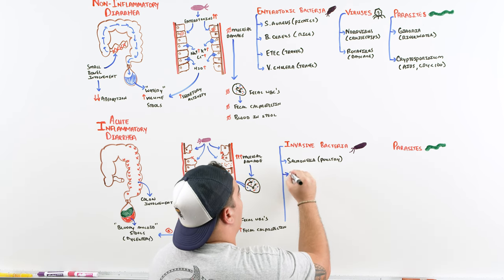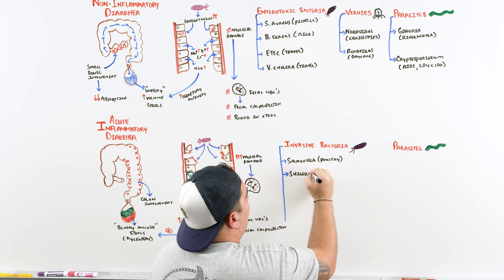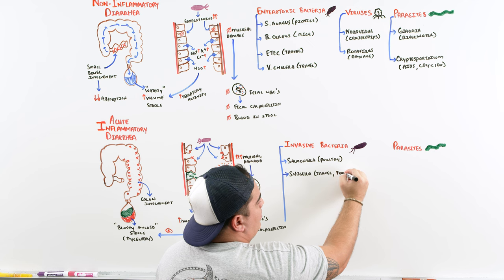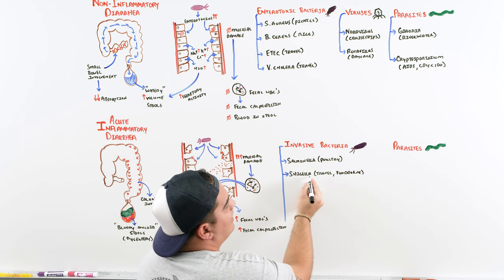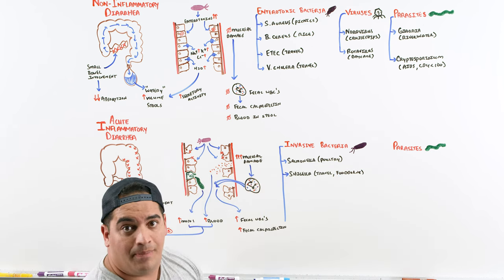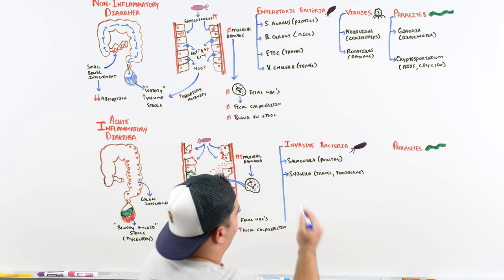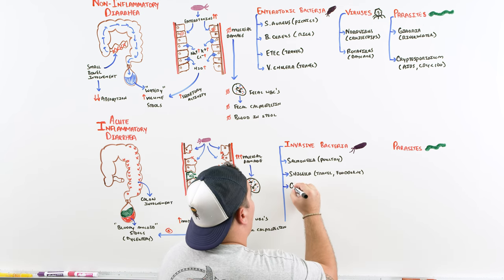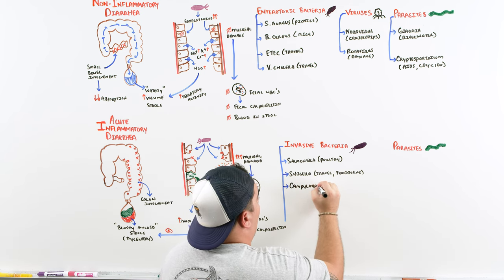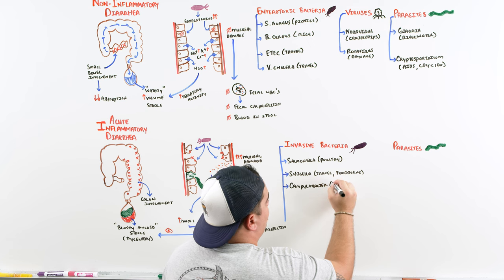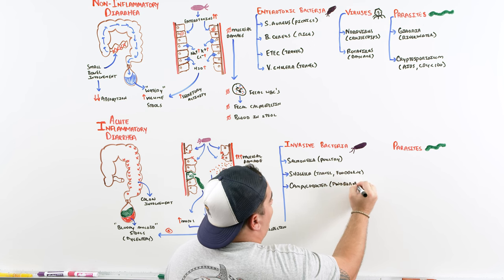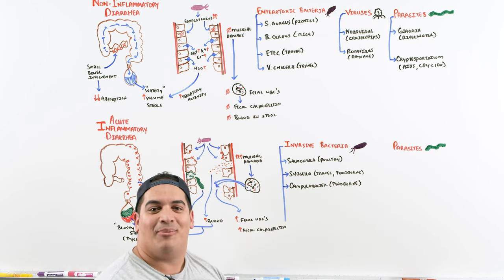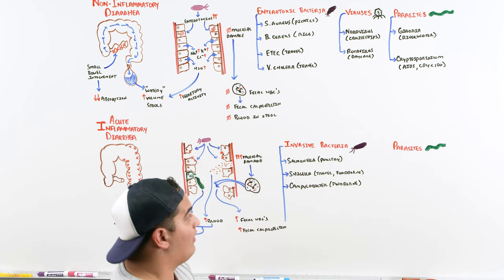Another one is Campylobacter — also a foodborne pathogen. An important test-question association: Campylobacter is linked to Guillain-Barré syndrome. We won't go too deep into that, but it's worth knowing.